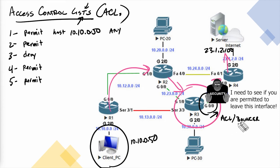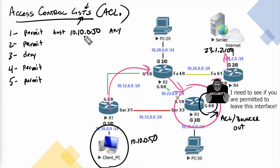Let's call the ACL the bouncer controlling access at that door. We train the bouncer to look at all packets going out. If this client sends a ping request to the server, the bouncer looks at the first line and says: I'm instructed to permit traffic from source address 10.10.0.50 going anywhere — I will allow you to pass. And that traffic is allowed to be forwarded.